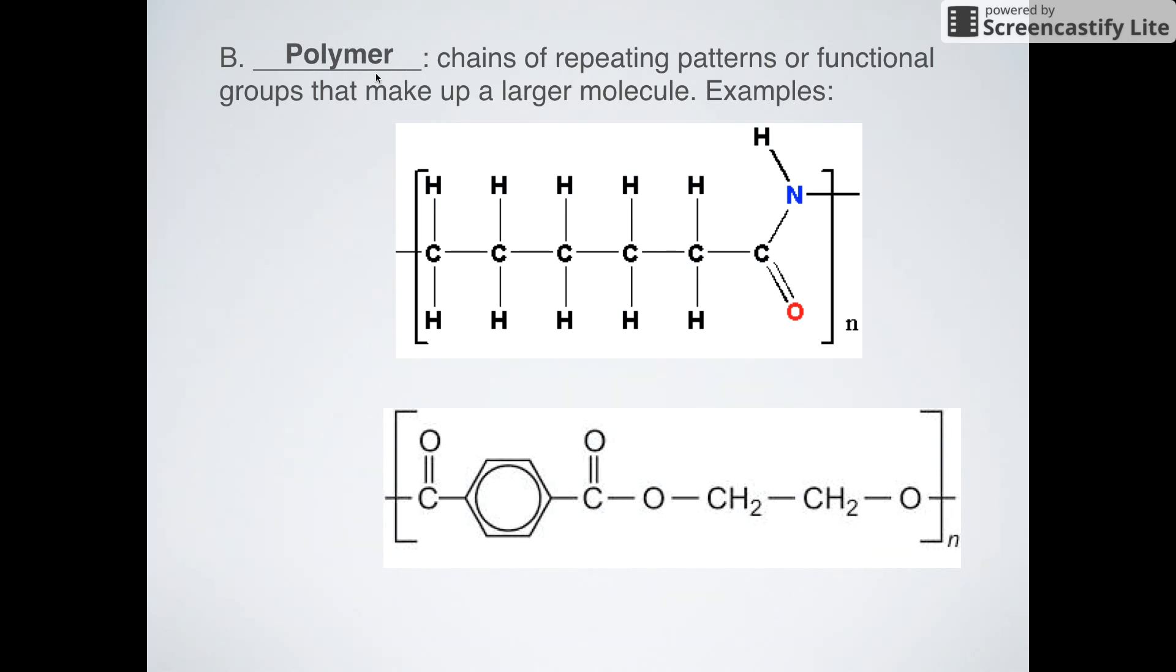Before we start, you need to know what a polymer is. A polymer is a long repeating chain made up of either organic structures like double bonds, triple bonds, rings, branches, or functional groups like esters, ethers, ketones, and carboxylic acids.